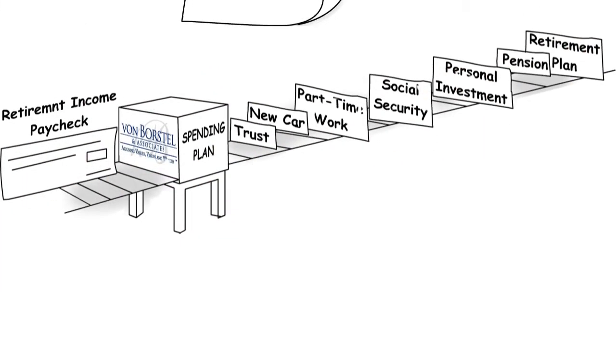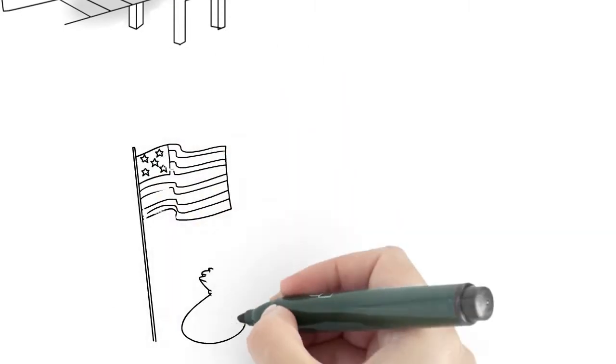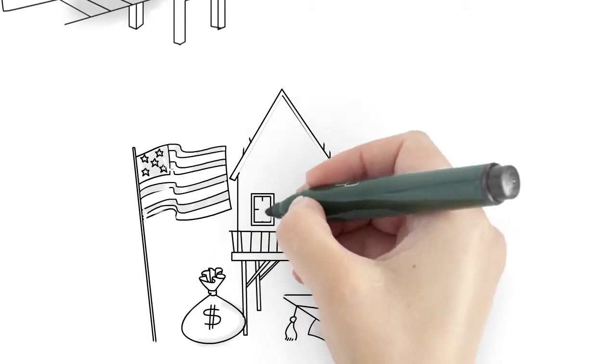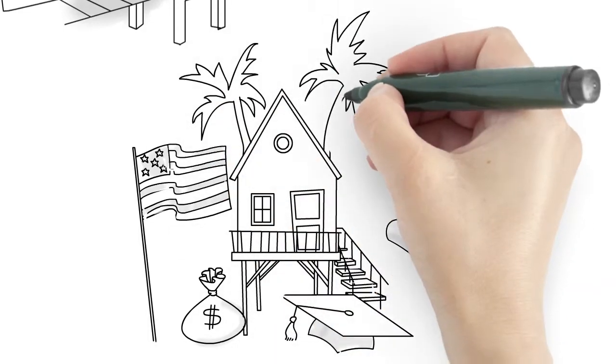They even review Ed and Nancy's tax returns, help establish a college fund for their grandson, and work with a mortgage broker to help the couple purchase their dream vacation home.